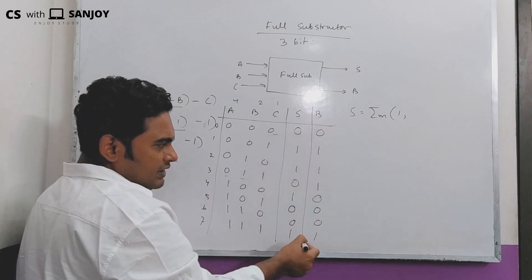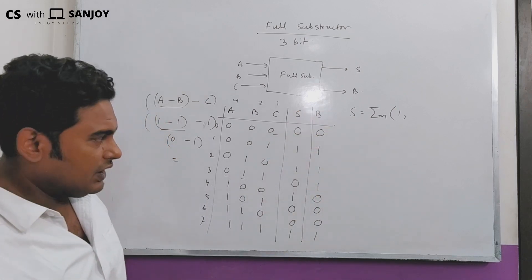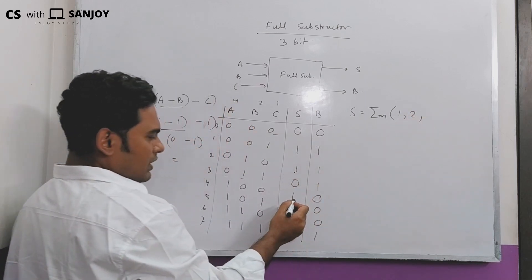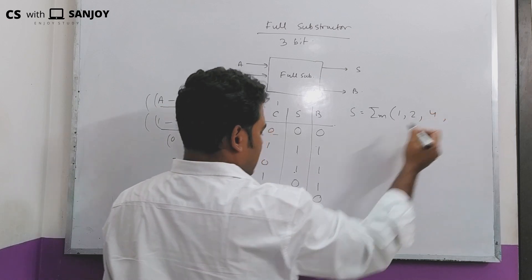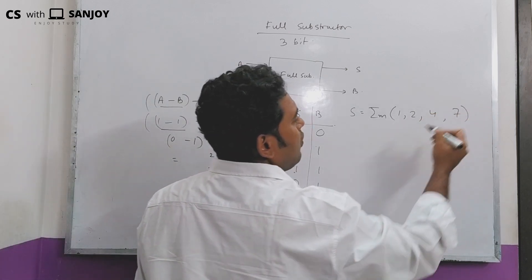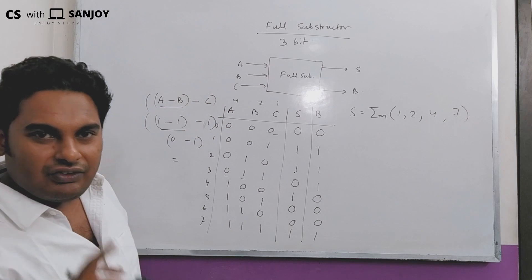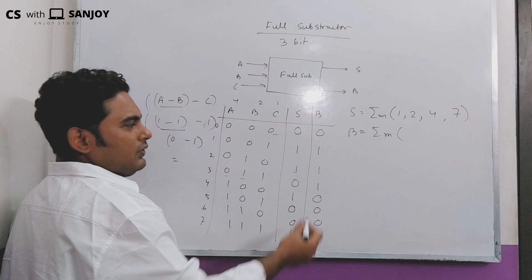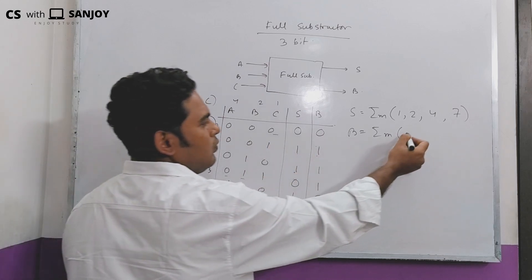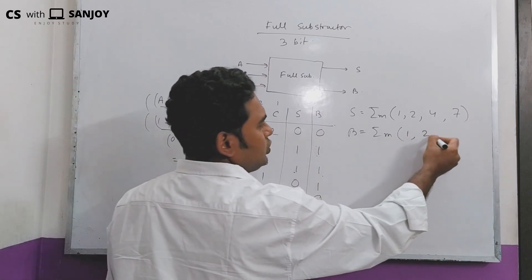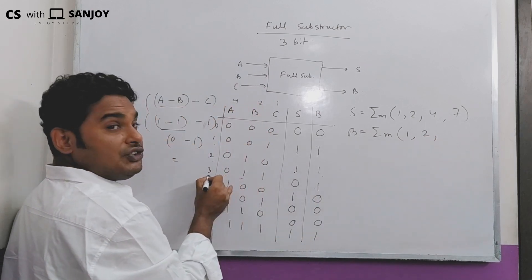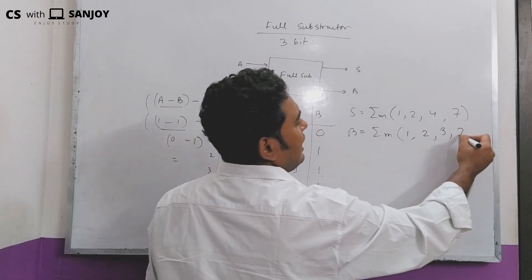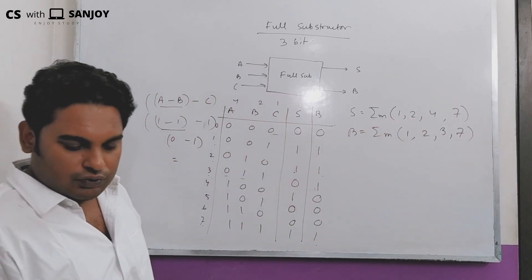So our outputs for the subtraction are at positions where there is a 1: that means minterms 1, 2, 4, and 7. And going through 1, 2, 4, 7 — those are the output positions for the difference output.